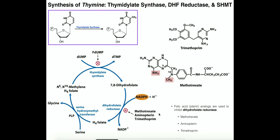The first enzyme we're going to target is dihydrofolate reductase. Drugs you may have heard of include methotrexate, aminopterins, and trimethoprim. These molecules structurally resemble dihydrofolate — methotrexate has a pterin ring that gets into the active site of dihydrofolate reductase and inhibits the reduction. If you can't complete this cycle you won't get back to N5-N10-methylene tetrahydrofolate, and without sufficient amounts of it you can't make sufficient DTMP. This is the first enzyme targeted for anti-cancer purposes.